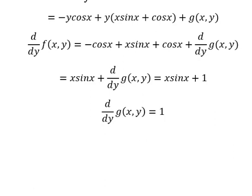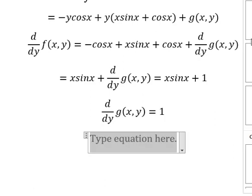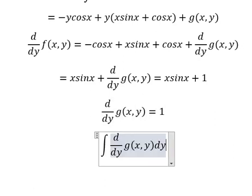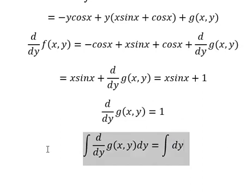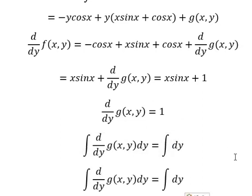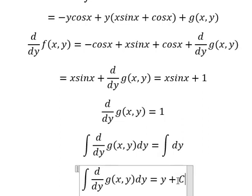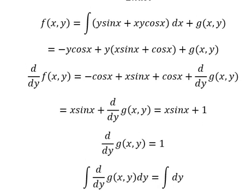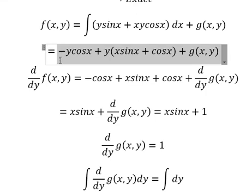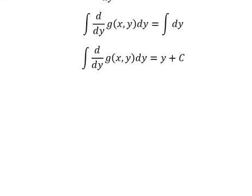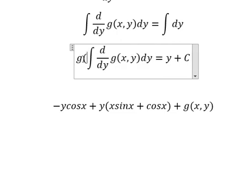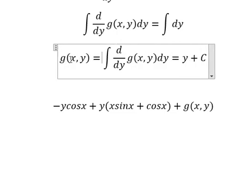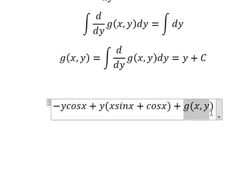Next we put the integration for both sides. So this one minus this one, so this one we have Y. Now we go back in here. The integration of this one gives us G of Y. So G of Y equals to Y. So we put Y in here.